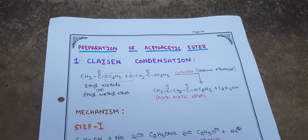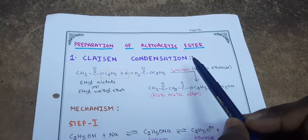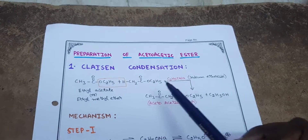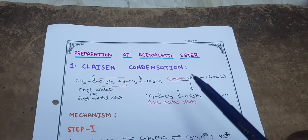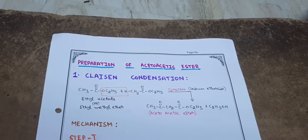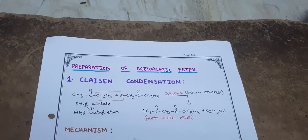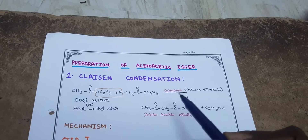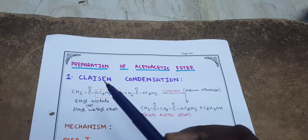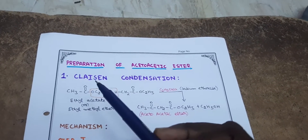Welcome to the channel. Today our topic is the preparation of acetoacetic ester. Claisen condensation is a method by which acetoacetic ester is prepared. This topic is important for degree students as well as students preparing for competitive exams. Claisen is the name of the scientist who first described this condensation reaction, so it is named Claisen condensation.